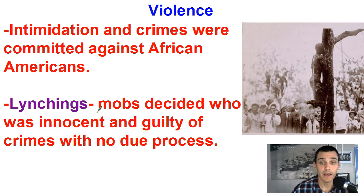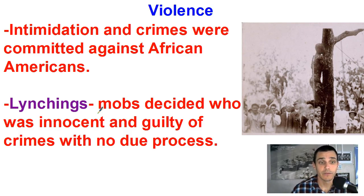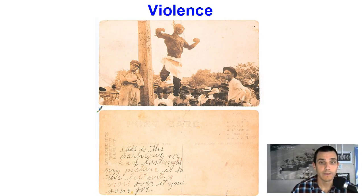In addition to that, there was violence, intimidation, and crimes were committed by groups like the KKK, which really came along later in this period. There was also the concept of lynchings, where mobs would get together and commit violence against African Americans — whether that was burning or hanging — just horrible crimes. Essentially the mob decided who was innocent or guilty without any influence from the courts.